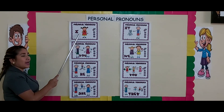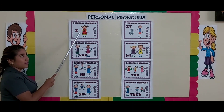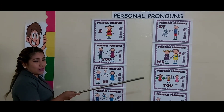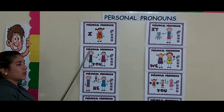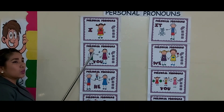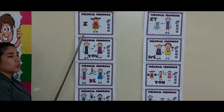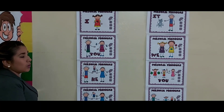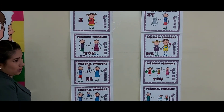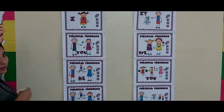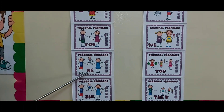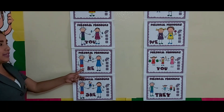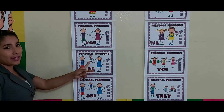We use I to refer to yourself. Nosotros utilizamos I para ti mismo, o sea, para nosotros mismos. You use you for another person. Tú utilizas you para otra persona — en este caso yo me refiero a ti, tú. He is for men. Él es para hombre, solo para género masculino.